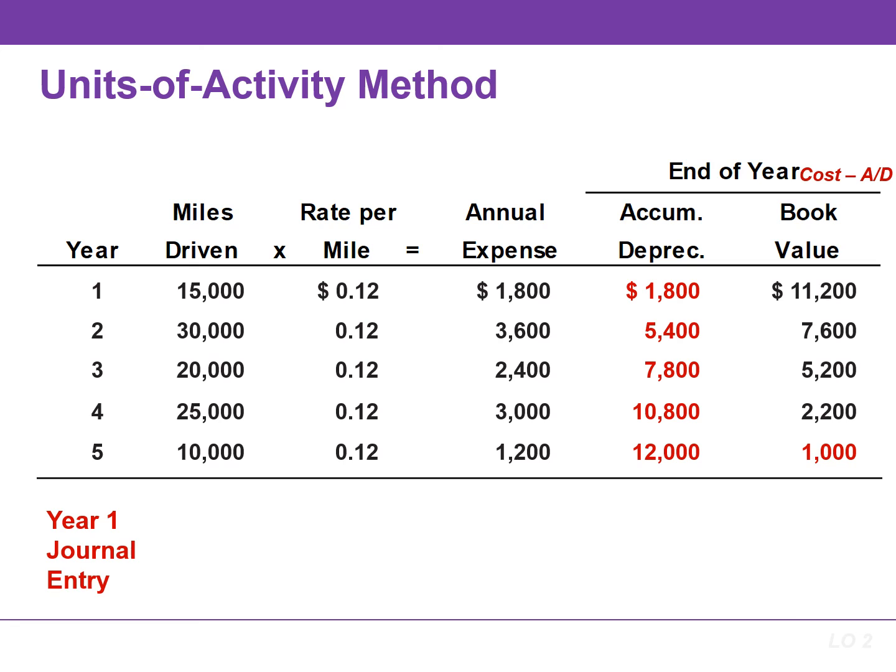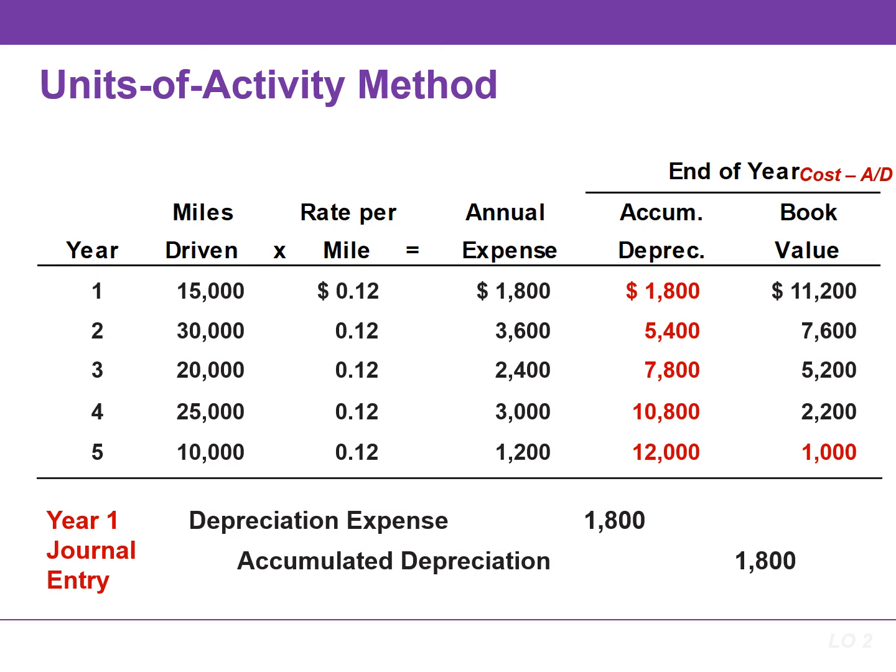The journal entry to record depreciation expense in the first year is a debit to depreciation expense for $1,800 and a credit to accumulated depreciation for the same amount.